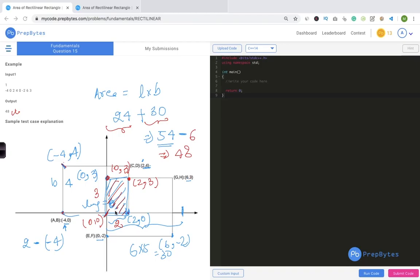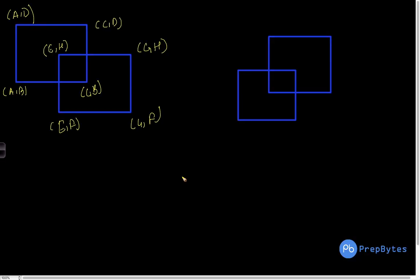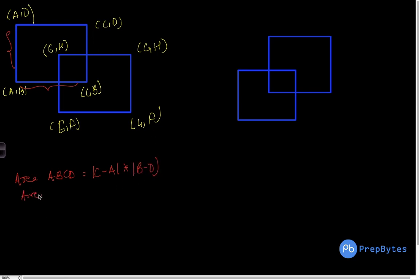Now let's set up the general formula. For rectangle ABCD, the area is |C minus A| times |D minus B|. Similarly, area of EFGH is |G minus E| times |F minus H|. Now we need to determine the overlapping area. The first thing is to find out whether there is an overlap or not.